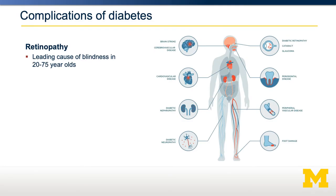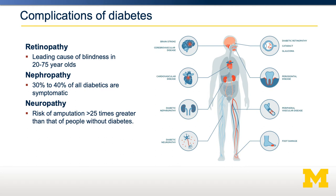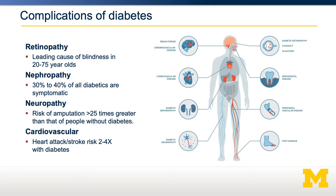There are several important complications of diabetes. Diabetic retinopathy is the leading cause of blindness in most adults. Nephropathy, which is kidney disease — about 30 to 40% of all diabetics have some kind of symptomatic chronic kidney disease. Neuropathy is damage of sensory neurons; the risk of amputation is 25 times higher in people with diabetes compared to people without. And cardiovascular disease — the risk of heart attack or stroke is somewhere between two and four-fold higher in individuals with diabetes. The elevated chronic increase in blood glucose can affect almost every organ system in the body, often to very devastating consequences.